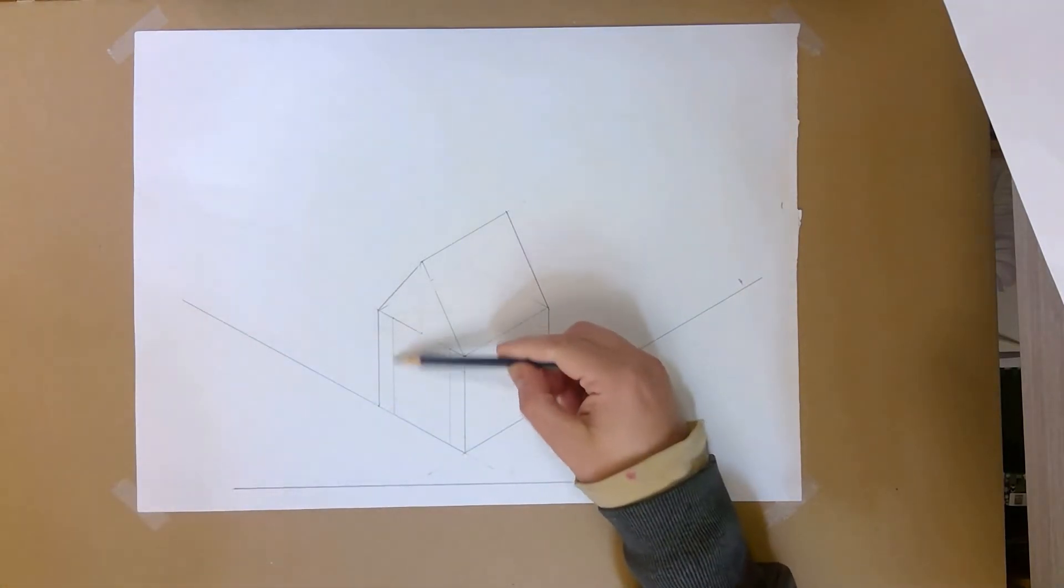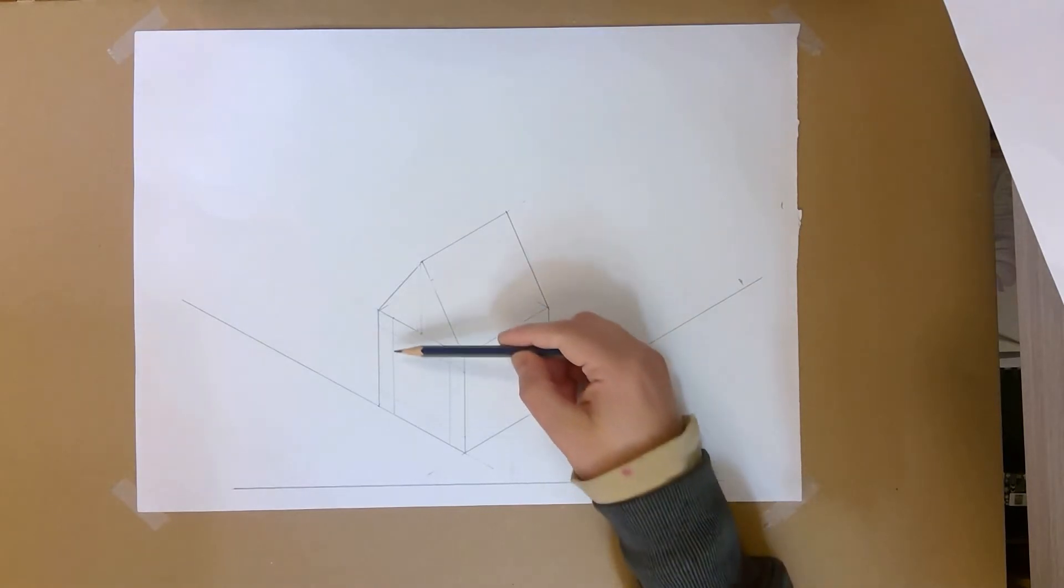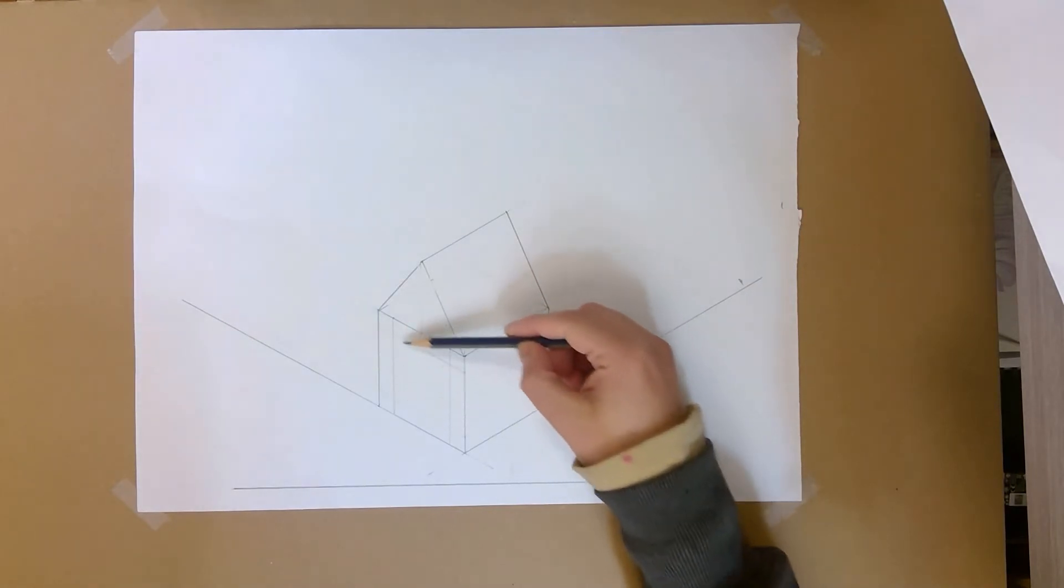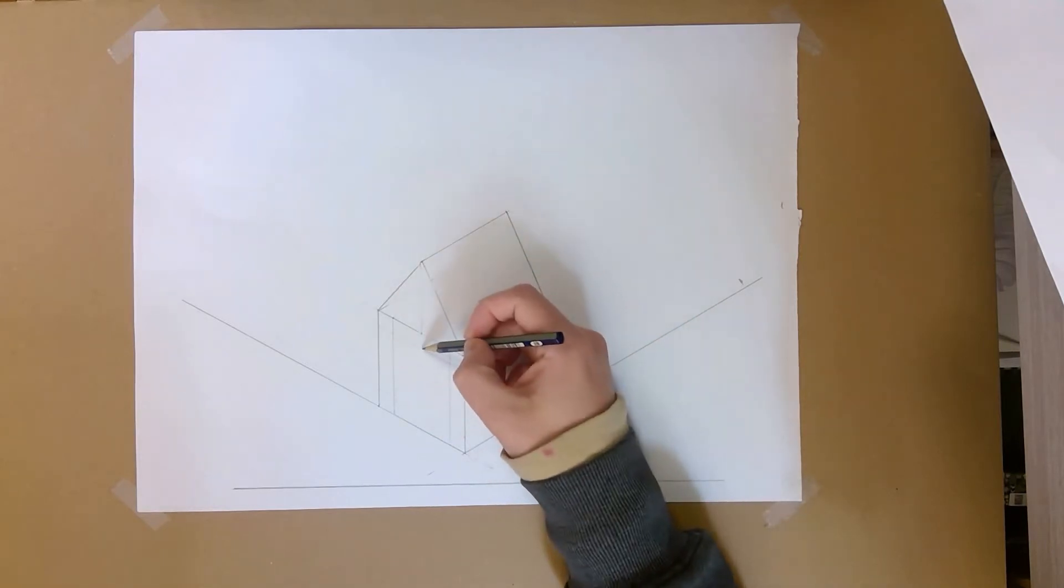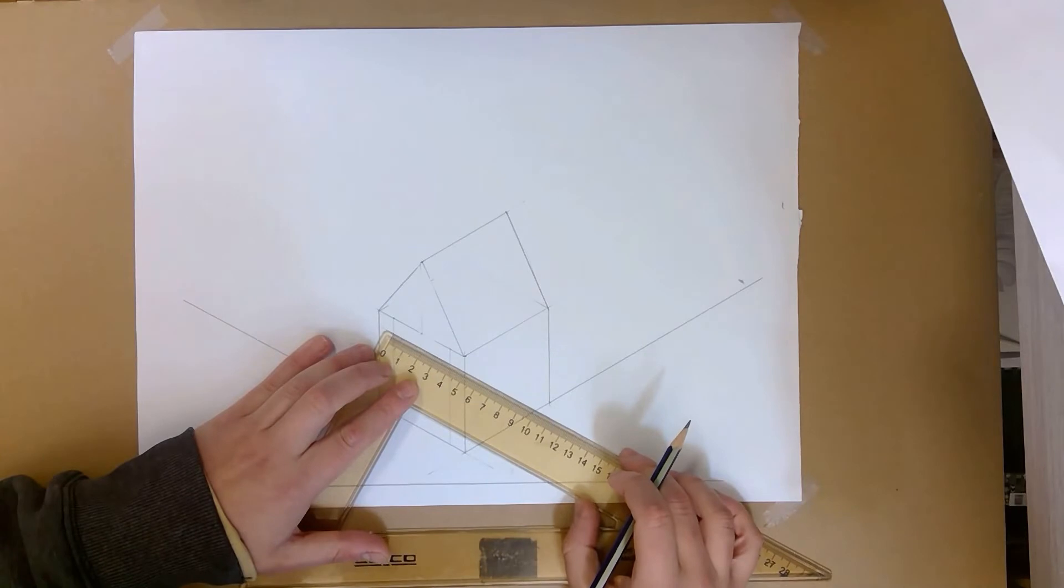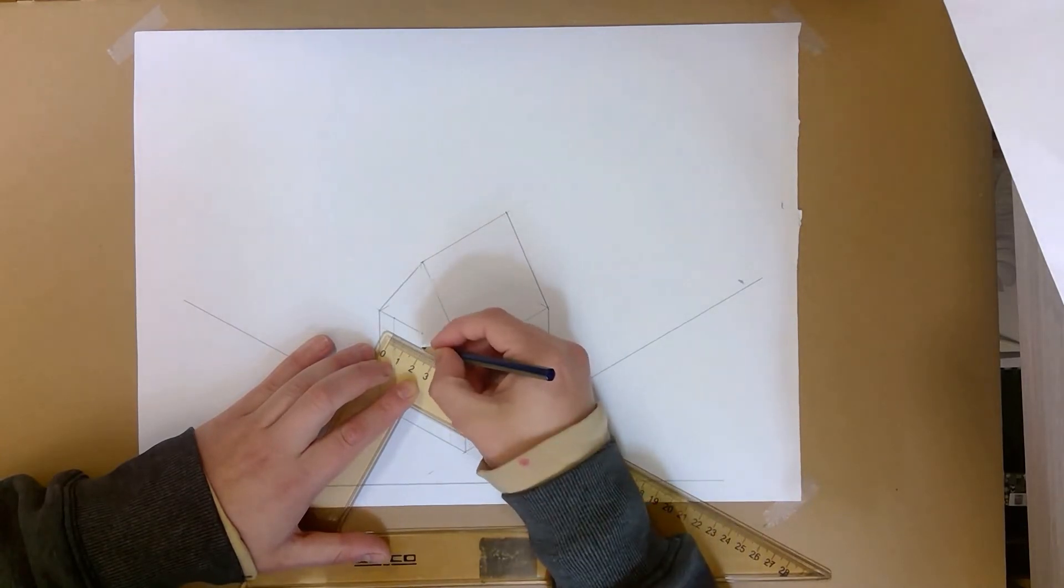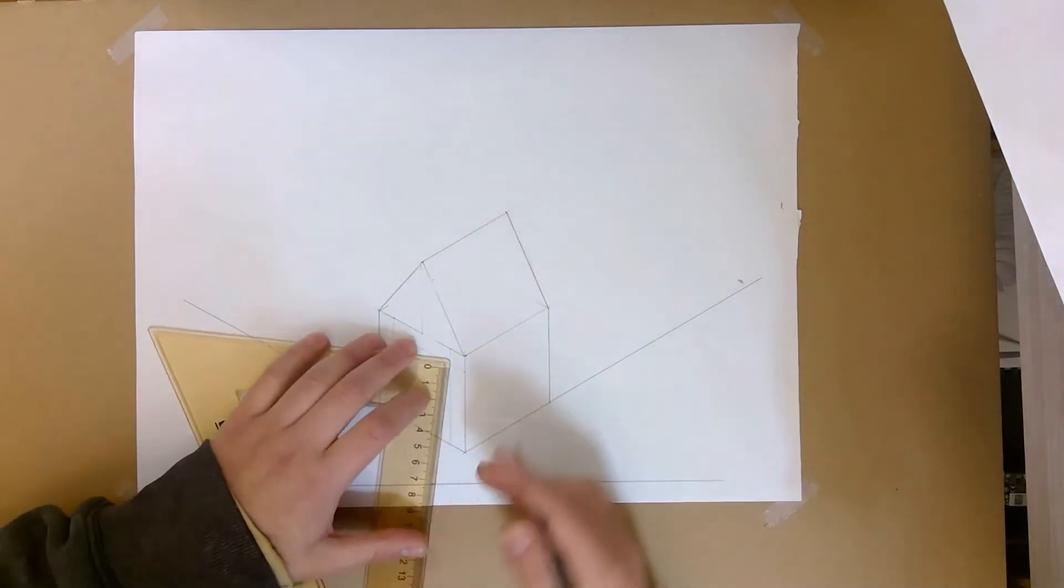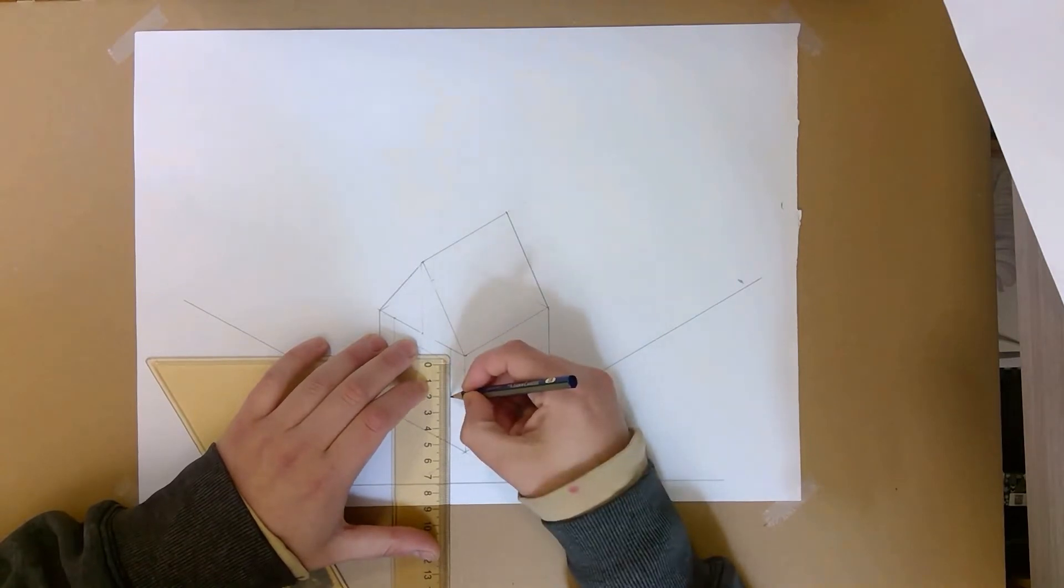Now that I have that four by four centimeter space, what I want to do is turn this square into a window. So I need to find the halfway point on each side. And because I know it's four centimeters, it's going to be two centimeters here and two centimeters down this way.